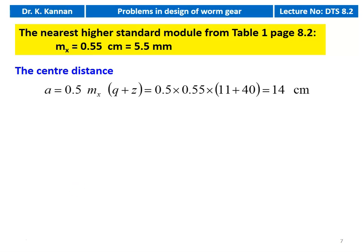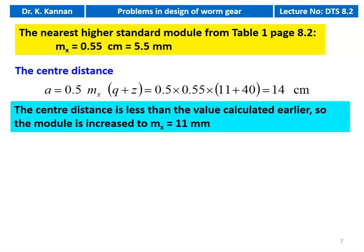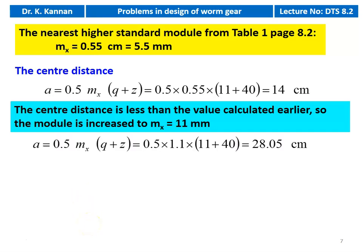Now we calculate the center distance: A = 0.5 × mx × (Q + Z) = 0.5 × 0.55 × (11 + 40) = 14 centimeter. This center distance is less than the value calculated earlier, so we have to increase the module. The module is increased to 11 millimeter (1.1 cm). Now the center distance A = 0.5 × 1.1 × (11 + 40) = 28.05 centimeter, which is higher than the previously calculated value.